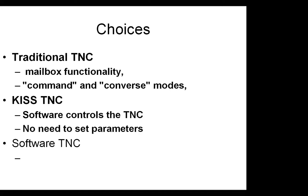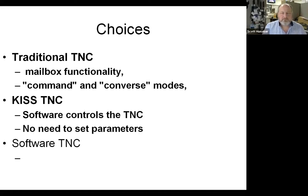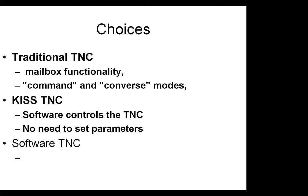A little bit of historical trivia: when KISS mode was designed, it was envisioned as a short-term hack that would last perhaps a year or two, to bridge from traditional TNCs into what were envisioned to be much more intelligent nodes. It took us 30 years to get there. KISS was intended as a quick-and-dirty hack — done over a weekend by a handful of guys who were already on the internet back in the early to mid-80s. A classic example of never doing a quick-and-dirty hack you don't intend to live forever.